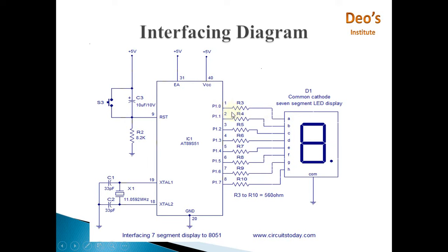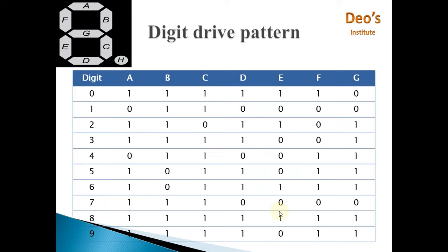Now we will see how the digits will be displayed and what will be the corresponding inputs. If you want to display 0, then all LEDs should be on except G. So A, B, C, D, E, F all will be 1 and G will be 0.